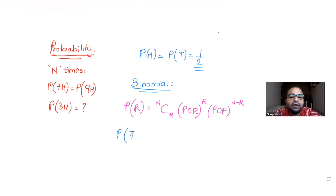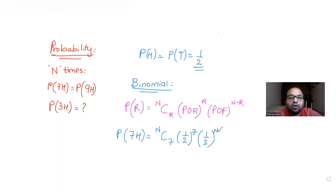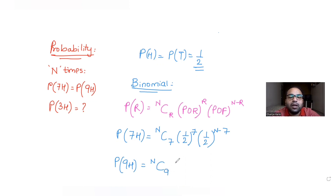So P(7 heads) = nC7 × (1/2)^7 × (1/2)^(n−7). Similarly, P(9 heads) = nC9 × (1/2)^9 × (1/2)^(n−9).